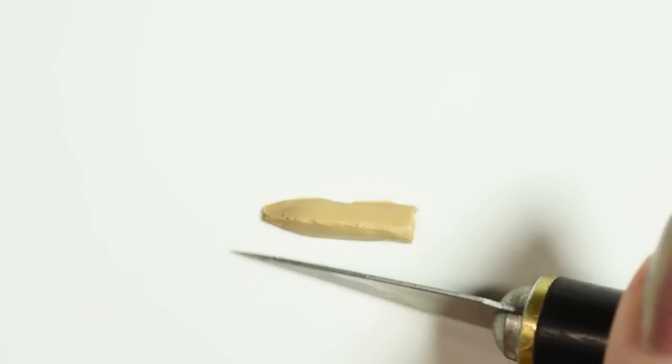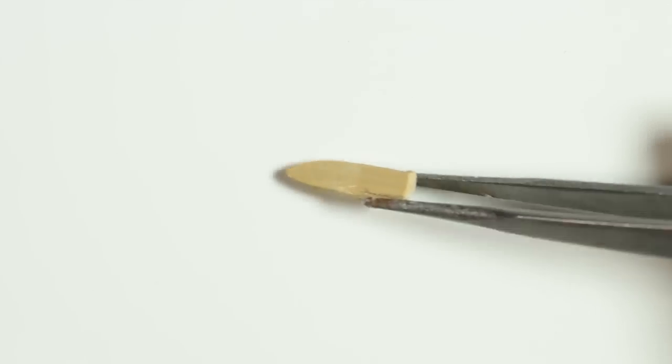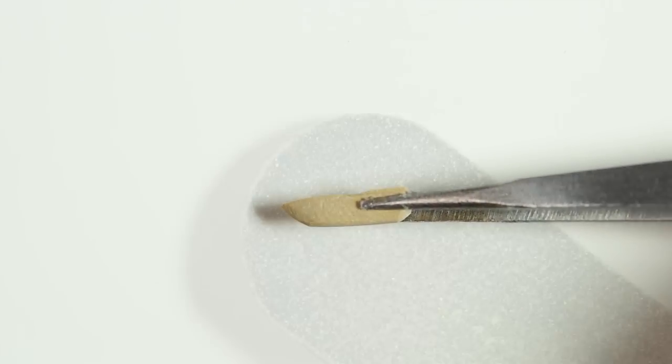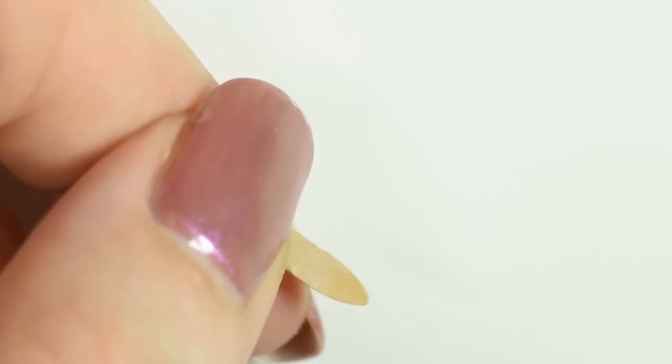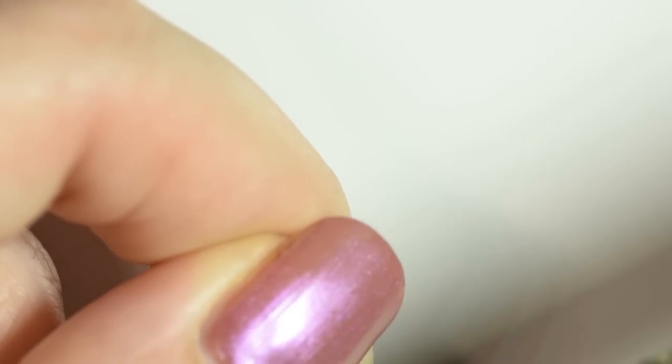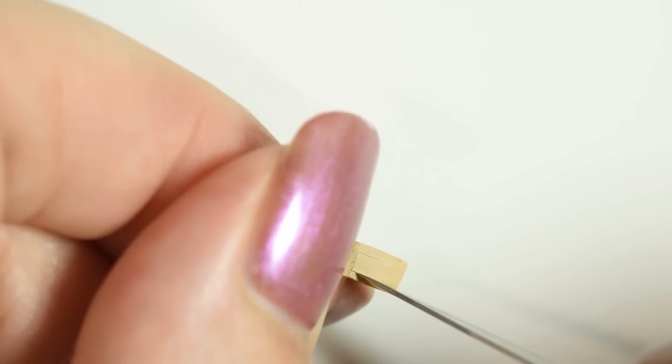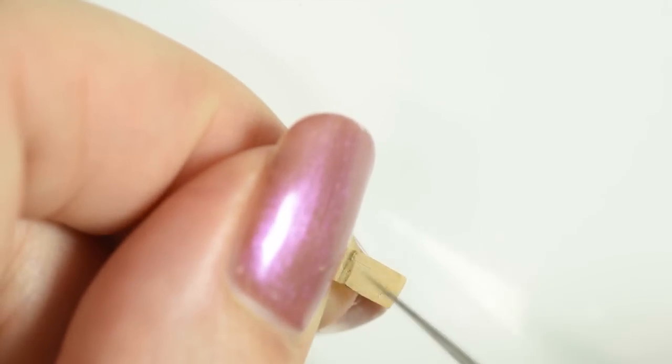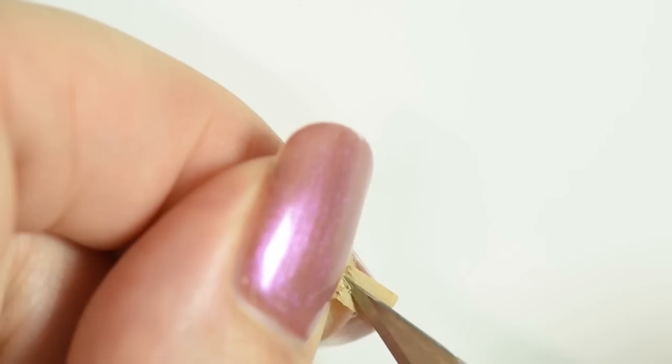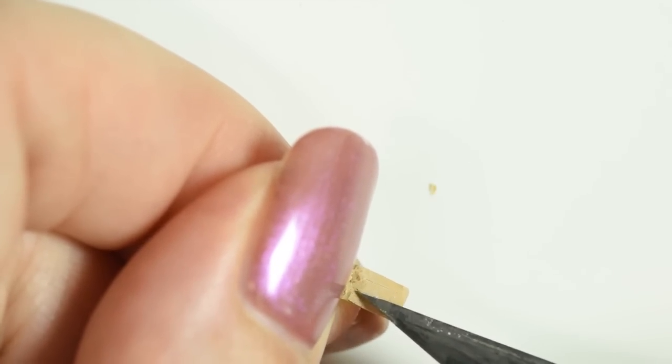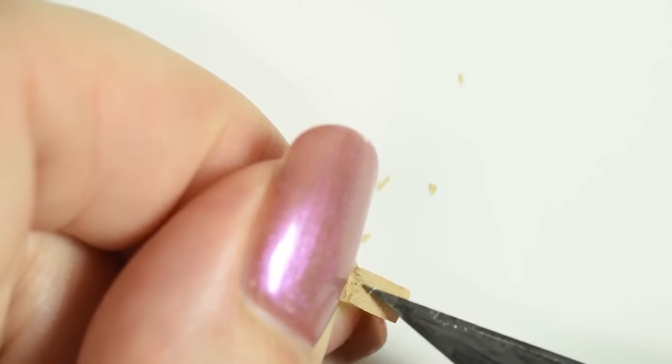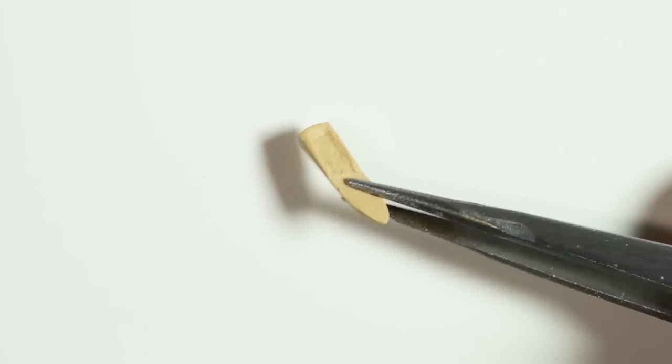Once you've got the basic shape, bake it for 5 minutes to harden. Then get out a file and file the front part of the ship so the back part looks raised. Then carefully use your exacto to cut away some of the inside from the back part. And then this is what we have so far.